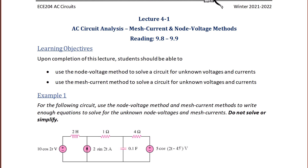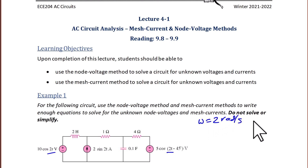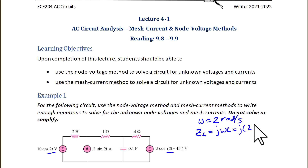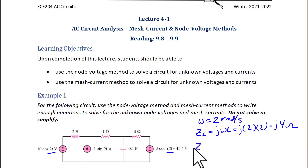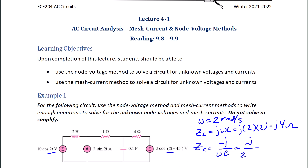Example 1: For the following circuit, use the node voltage method and mesh current method to write enough equations to solve for the unknown node voltages and mesh currents. Note that omega is 2 radians per second and we have two sources at the same frequency. We write the impedance of the inductor as jωL = j(2)(2) = j4 ohms, and the impedance of the capacitor as −j/(ωC) = −j/(2 × 0.1) = −j5 ohms.